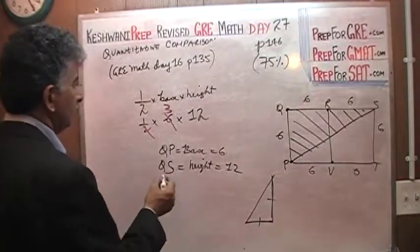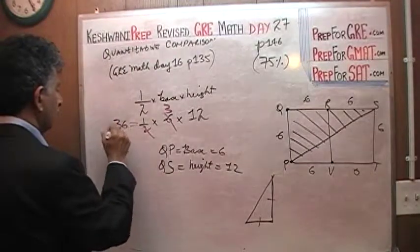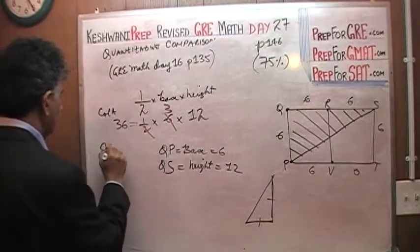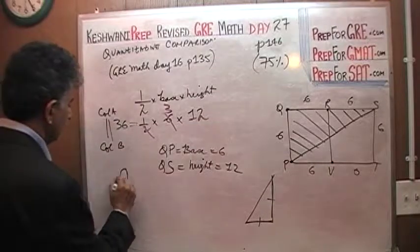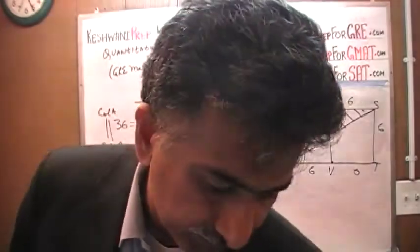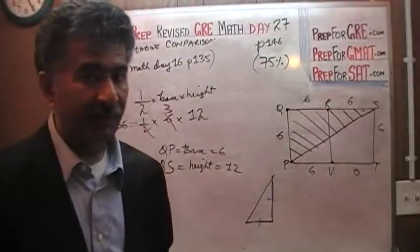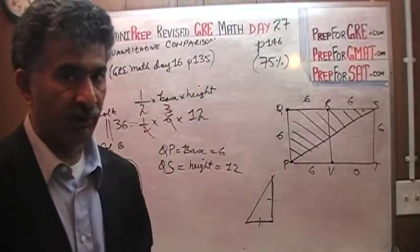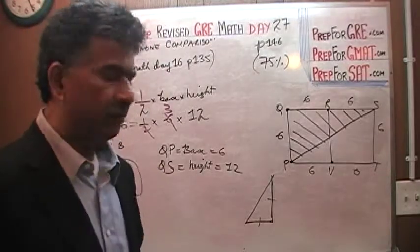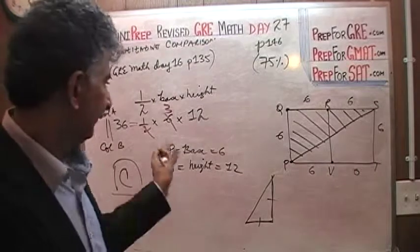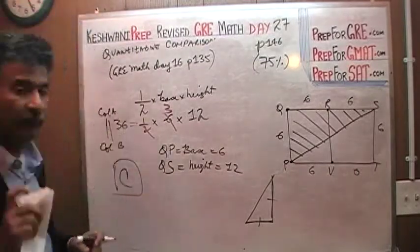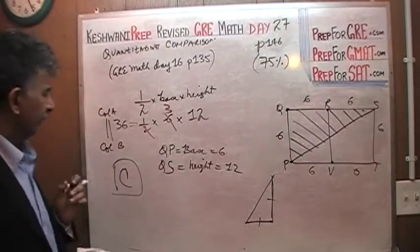That's all. Column A is 36, which is the same as Column B, so they are equal to each other — the answer is C. That was one way of doing the problem. There is another way, in case you're curious — this is not how I did it first.